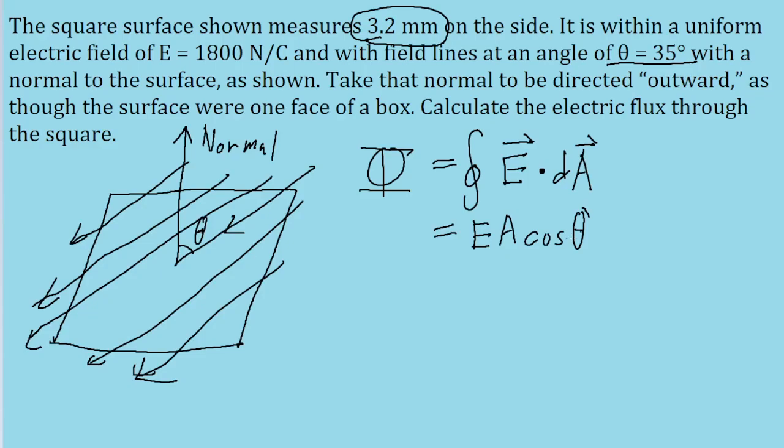The problem gives us an angle theta, but looking at the diagram, that angle is between the head of the normal vector and the tail of the electric field lines. This is not the angle we want in our formula. Because one of those vectors is in the wrong direction,